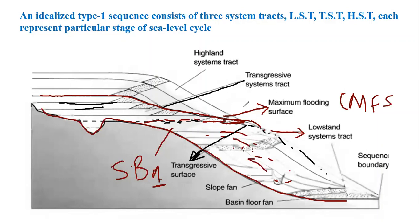After the transgressive system track, or after the maximum marine flooding surface, there is deposition of the highstand system track. The top of the highstand system track is characterized by the sequence boundary. It will be a type 1 sequence boundary if sea level fall occurs below the offlap break point, and a type 2 sequence boundary if sea level fall does not occur below the offlap break point.